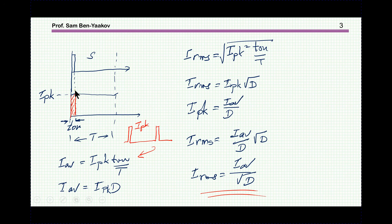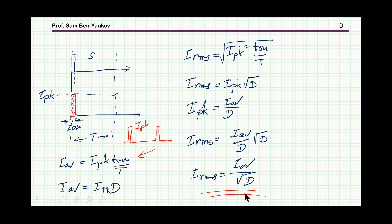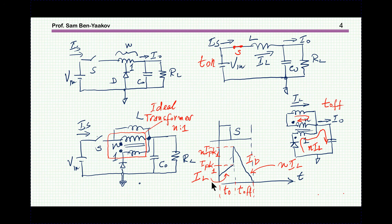If we have these sharp pulses, we can calculate the RMS. The average current of this pulse can be expressed as the peak times the duty cycle. Finding the RMS, we get that it equals the average current from the input divided by the square root of D. That means the shorter the D, the higher the RMS current — so there is a problem here aside from the ripple.